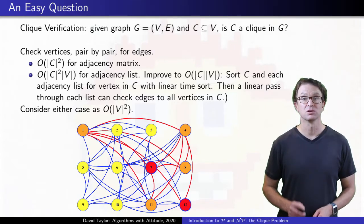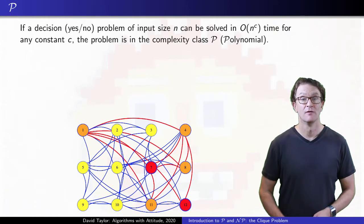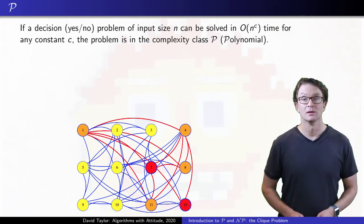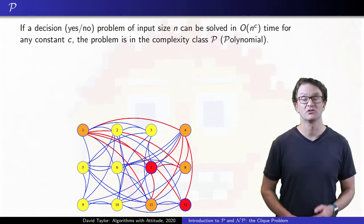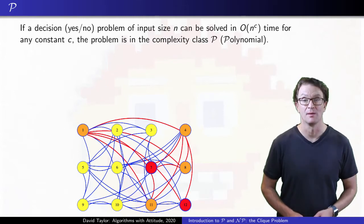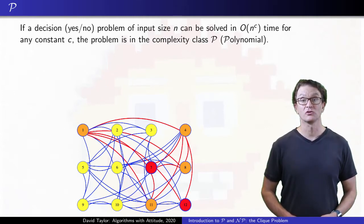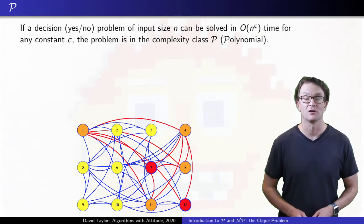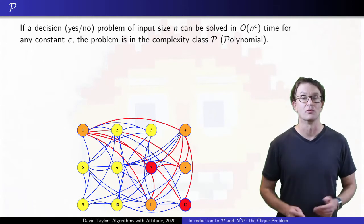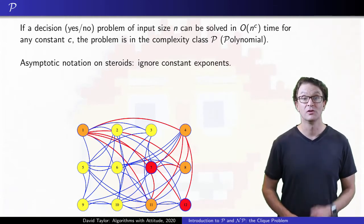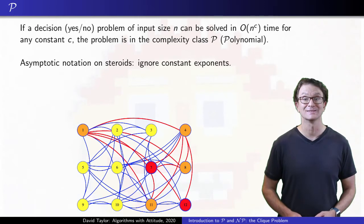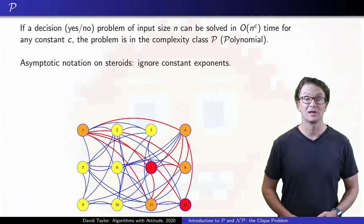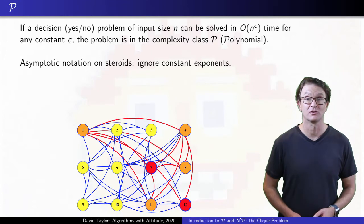That brings us to the complexity class P for polynomial. Problems fall into the P complexity class if they are decision problems, yes-no problems, that can be solved in polynomial time. Asymptotic notation ignores constant multipliers, so you can give a set of all problems that can be solved in, let's say, n squared run time, regardless of the coefficient. This goes further, ignoring constant exponents, so it catches all polynomials of any fixed degree.